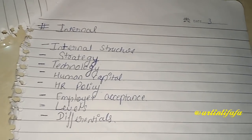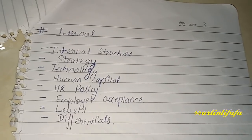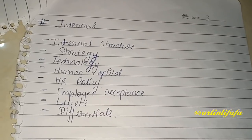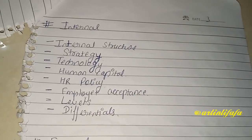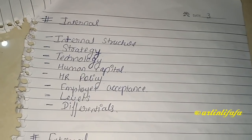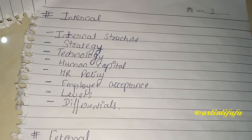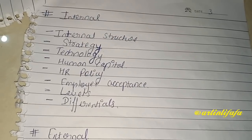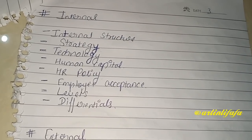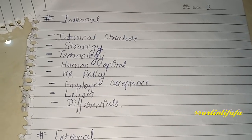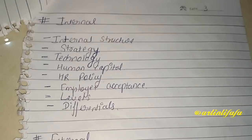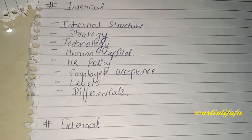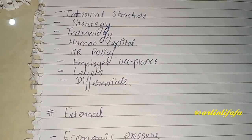Next topic ہے equity compensation، جو تین طرح کی ہوتی ہے: internal، external اور individual۔ Internal equity compensation میں internal structure کو دیکھ کے compensation set کرتے ہیں — اگر same level پہ بہت سارے employees ہیں تو salary اسی کے base پہ fix ہوگی۔ یہ بھی دیکھا جاتا ہے کہ organization کس strategy کو follow کر رہی ہے۔